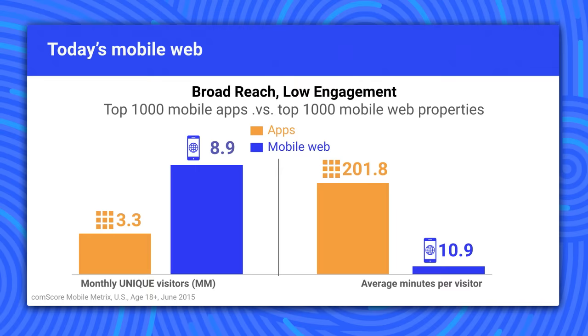Are there real businesses at scale seeing success with these investments? We've been working hard to provide real-life examples so that you have proof points. Removing barriers to entry means users are much more likely to try out a mobile web property than an app, so the mobile web sees many more unique users. However, native apps currently capture users' attention and get a lot more user engagement.